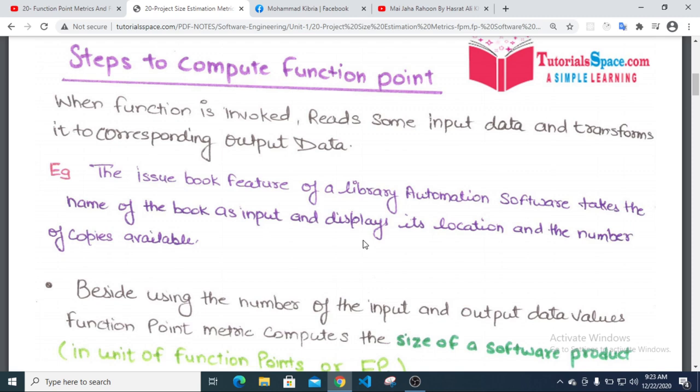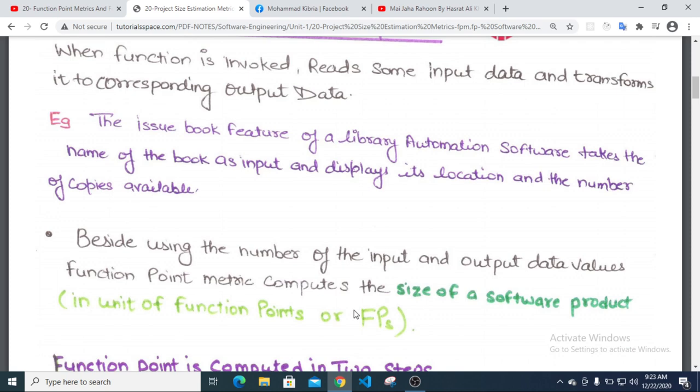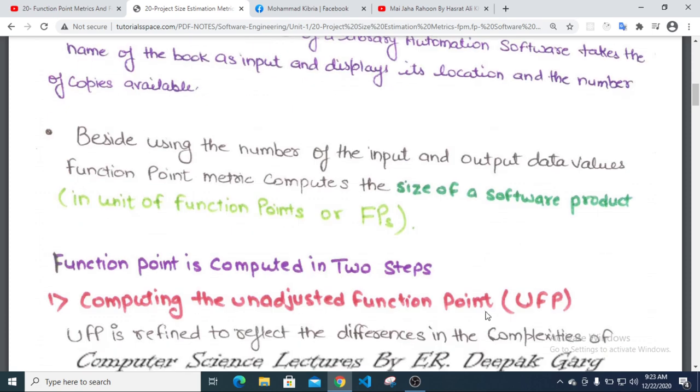When a function is invoked, it reads some input data and transforms it to corresponding output data. For example, the issue book feature of a library automation software takes the name of the book as input and displays the location and the number of copies available. Besides using the number of input and output data values, function point metric computes the size of a software product in units of function point.